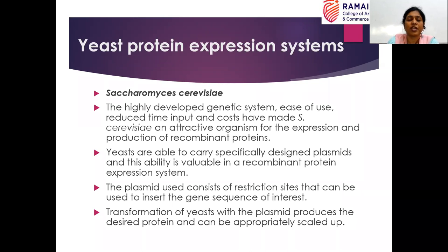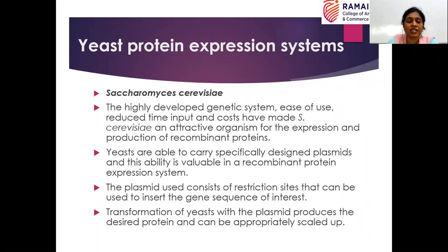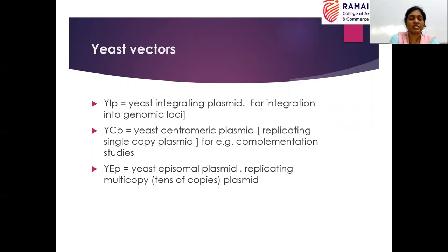So, yeast protein expression system — as mentioned, the simplest eukaryotic organism yeast is used because of its well-developed genetic system, ease of handling, and lower experimental cost. These are the reasons why we take yeast as a model organism for any eukaryotic study. There are several vectors which can be used for yeast. The yeast vectors include: yeast episomal plasmid — these are the expression vectors which can be transformed into yeast as expression system.